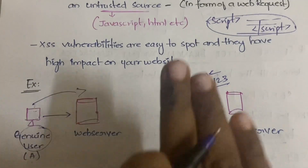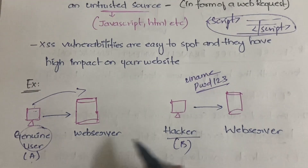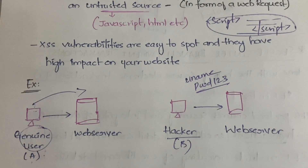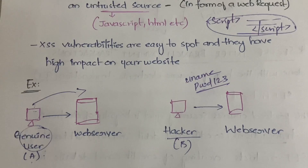The next time User A opens the web server, the hacker has added some attractive flash sale graphics or thumbnails. The genuine user gets attracted to that and clicks on it. Once he opens it, he gets redirected to different pages and ultimately his data confidentiality may be compromised. The hacker gets to know all the details of the user — which website and computer he is logging in from — and can then do whatever he wants from this genuine user's account.